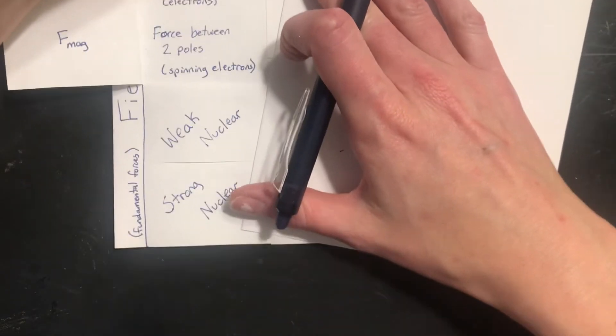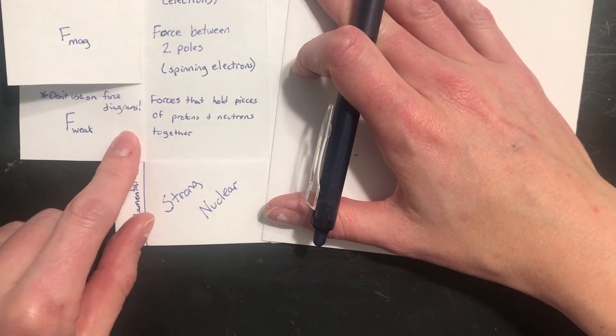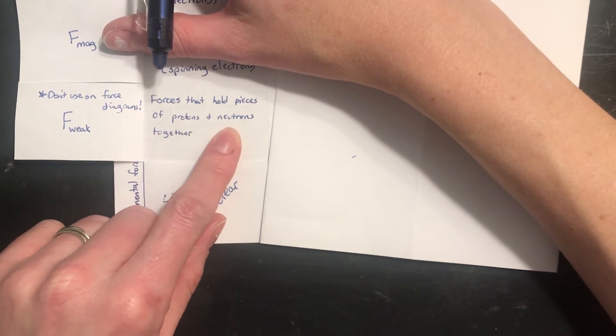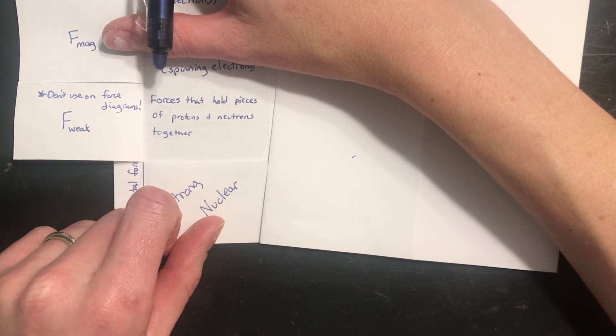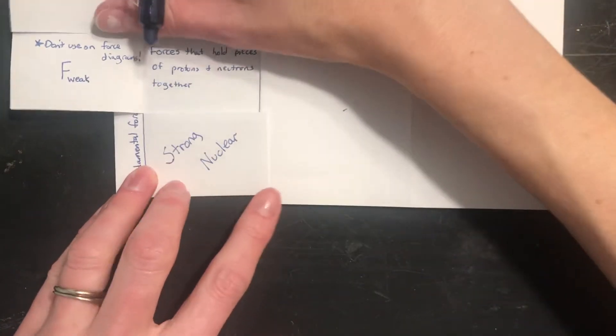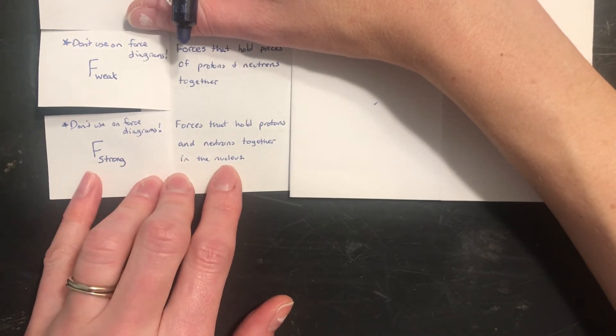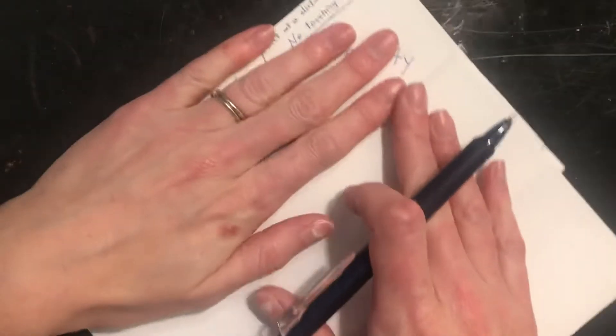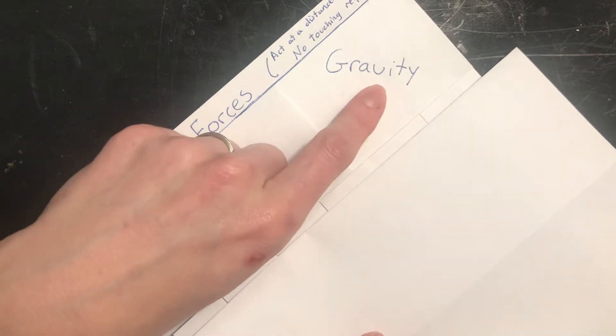The last of these field forces are also kind of together. The weak nuclear forces will never show up on a force diagram, which you'll learn about later. Force weak. They're forces that hold the pieces of protons and the pieces of neutrons together, so what makes a proton a proton is held together because of weak nuclear forces, and strong nuclear forces are what holds those protons together with the neutrons in a nucleus. Those don't show up on force diagrams either, so we've got those there, so that's force strong. So that sums up all of our field forces. Electric forces and magnetic forces can show up on force diagrams and gravity is almost always there, actually it is always there.